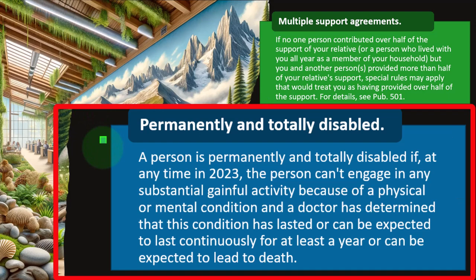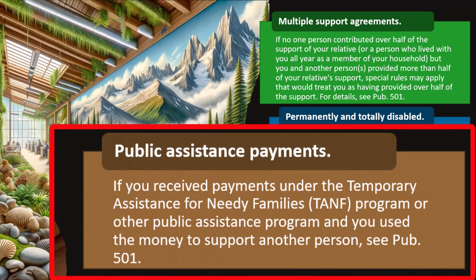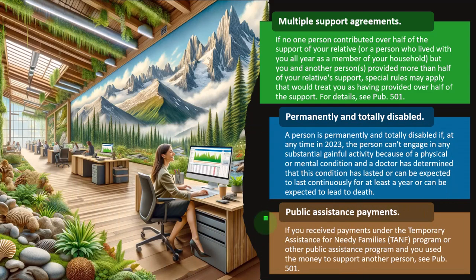Permanently and totally disabled: a person is permanently and totally disabled if at any time during 2023 they can't engage in any substantial gainful activity because of a physical or mental condition, and a doctor has determined this condition has lasted or can be expected to last continuously for at least a year, or can be expected to lead to death. This definition applied in the age test for a qualifying child. Also, public assistance payments under TANF or other public assistance programs used to support another person — see Publication 501 for details.